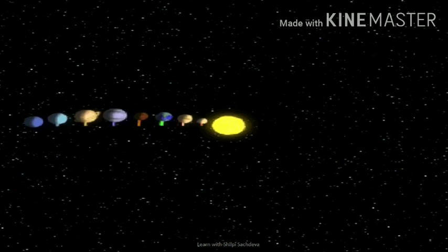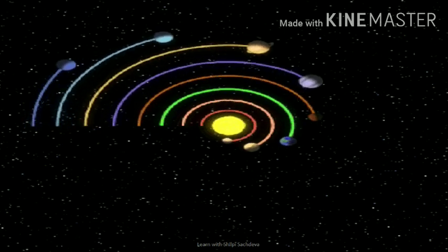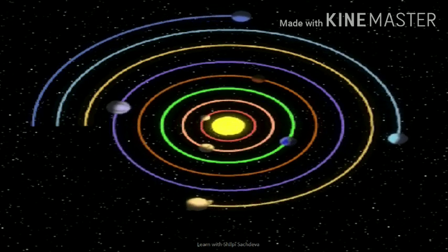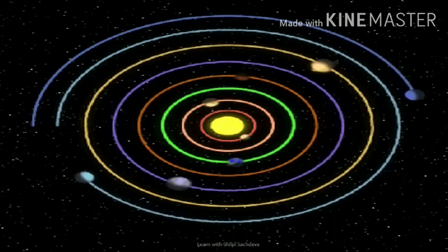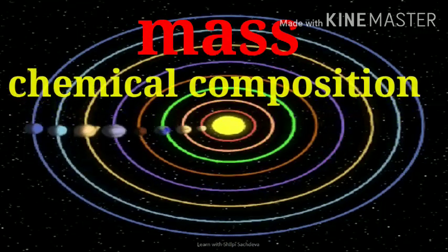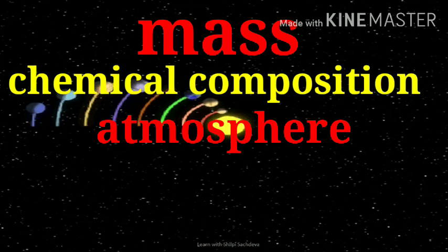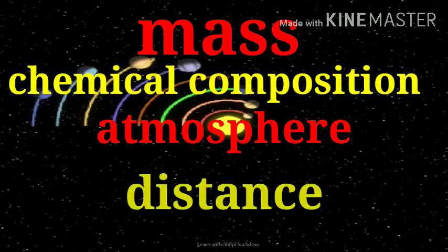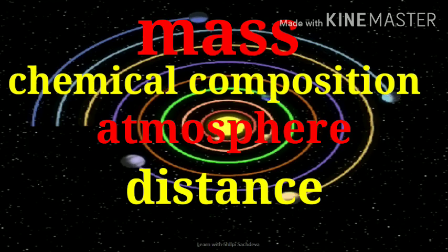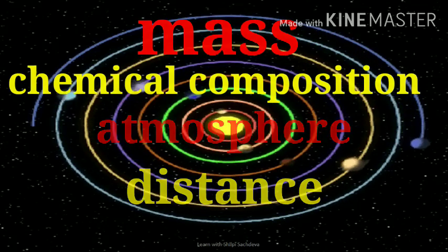Not a drop of liquid water can be found anywhere else in the solar system. It is because the Earth has the right mass, right chemical composition, the right atmosphere, and the right distance from the Sun that permits water to exist mainly as a liquid.